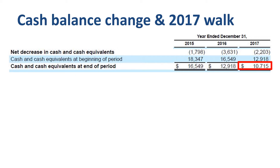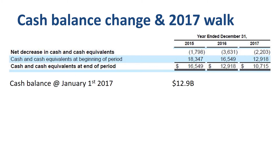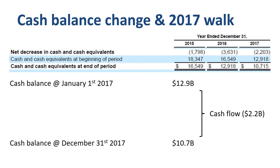So what is going on here? Even though in absolute terms $10.7 billion is a lot of cash, should we worry about the trend of the declining cash balance? That's what you can find out by going to the next level of analysis, reviewing the cash inflows and outflows during the year. 2017 started with $12.9 billion in cash for Alphabet Inc. and ended with $10.7 billion — a net cash outflow of $2.2 billion.